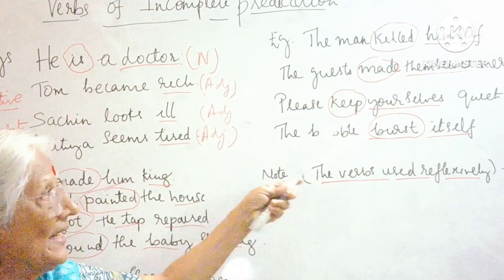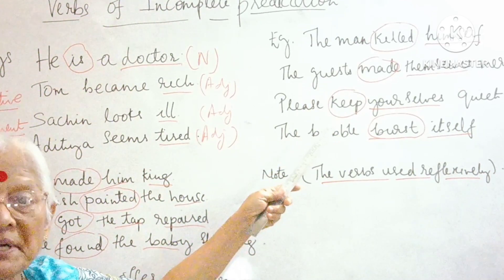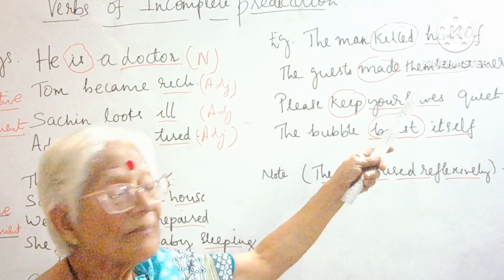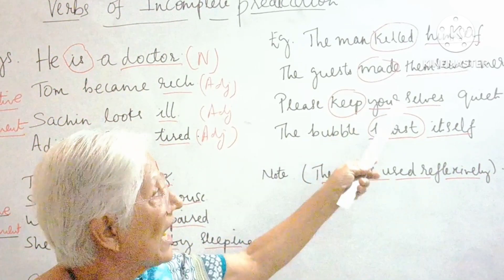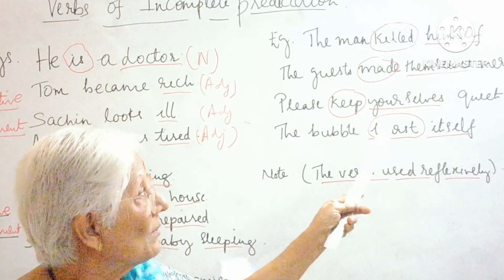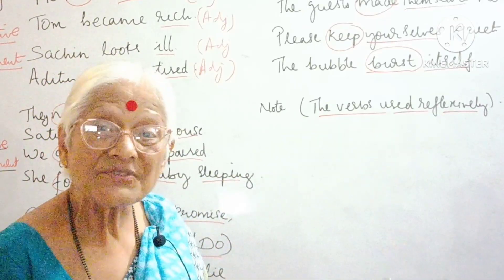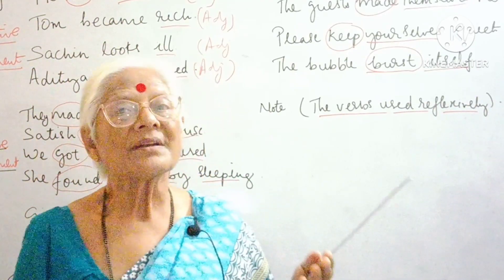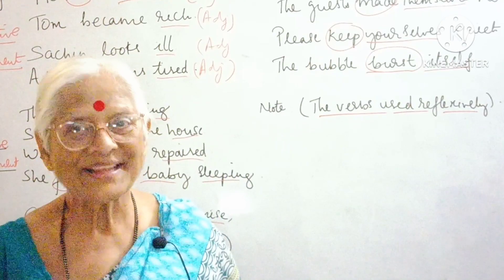So killed, made, keep, and burst are all verbs of incomplete predication that have used the reflexive pronouns himself, themselves, yourselves, and itself as complements. Verbs can be used reflexively as well. So remember, we have understood transitive verbs, intransitive verbs, and verbs of incomplete predication.